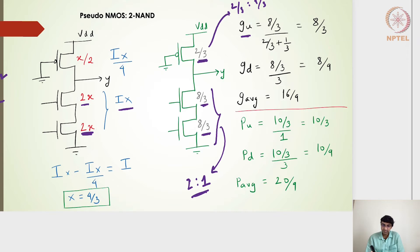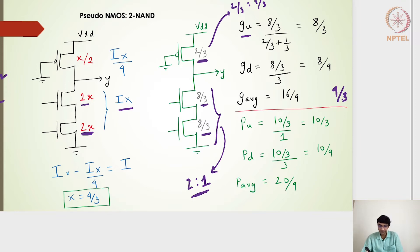For the going-down signal, the logical effort is (8/3) ÷ (2 + 1) = 8/9. The average logical effort g_avg turns out to be 16/9. For comparison, the regular CMOS two-input NAND gate has a g value of 4/3.